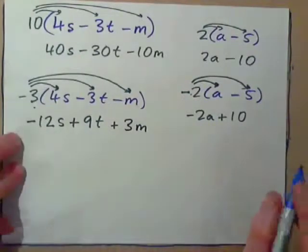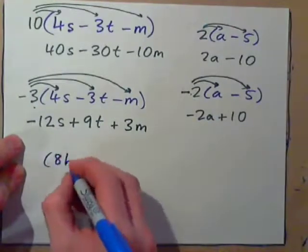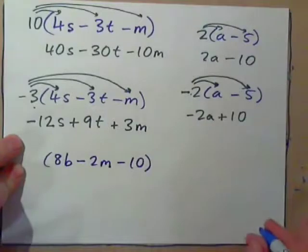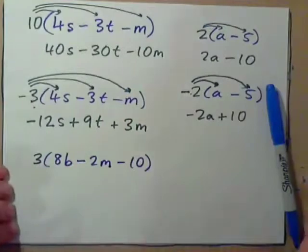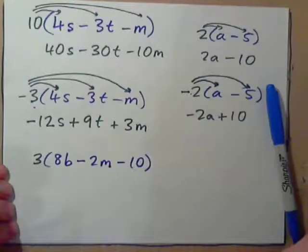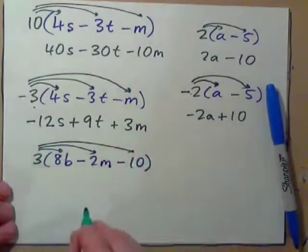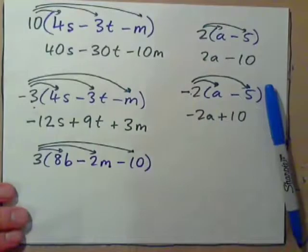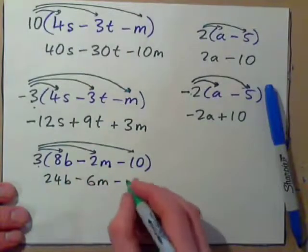Let's say in a bag you have 8 bananas, a debt of 2 marbles, and a debt of $10. If you had three of those bags, you multiply everything by positive 3. That gives 24B, minus 6M, and 3 times negative 10 is minus 30.